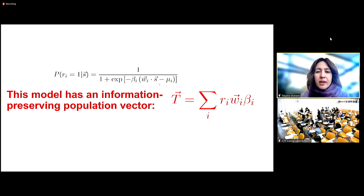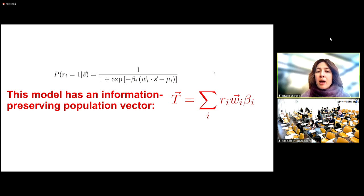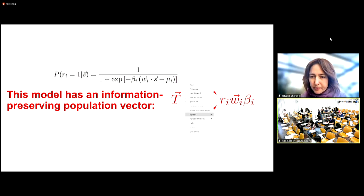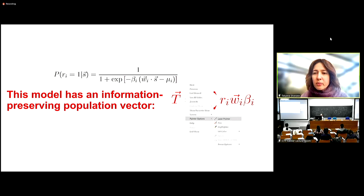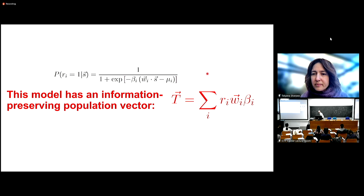As a function of this product W_i and S — in this case W_i is normalized to unit length — this function looks like a sigmoid. It goes between zero and one, something like this.